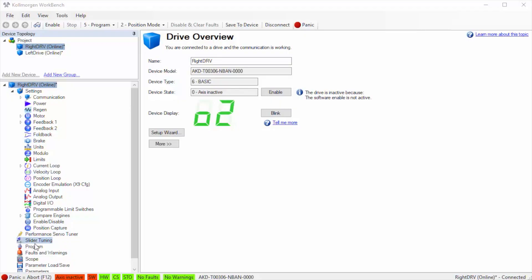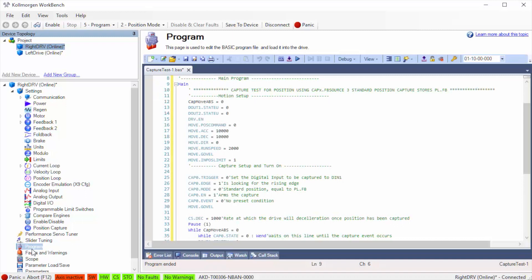A simple program has been set up to capture the motor's position when a trigger comes in on digital input 1. The following parameters are used to set up the trigger.